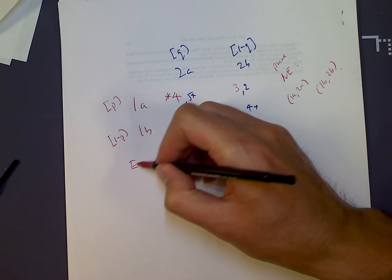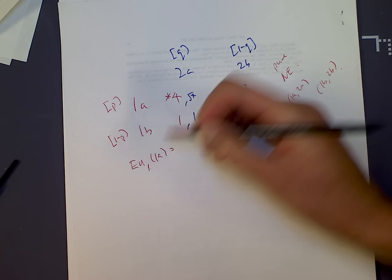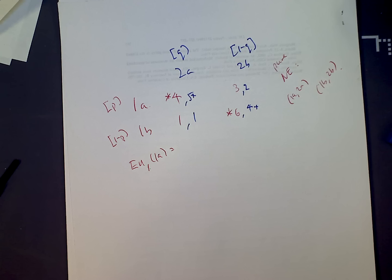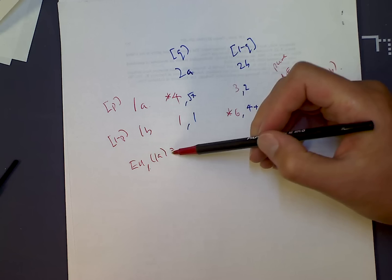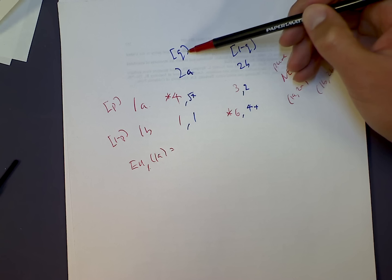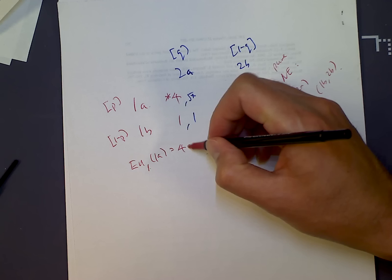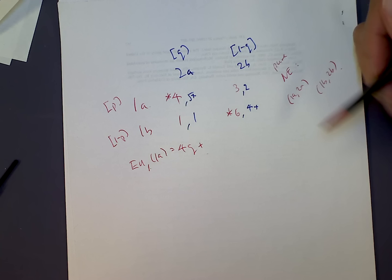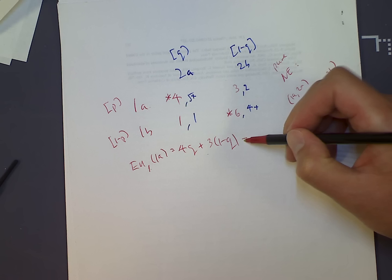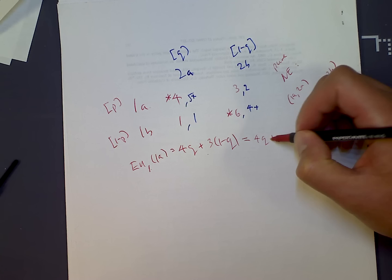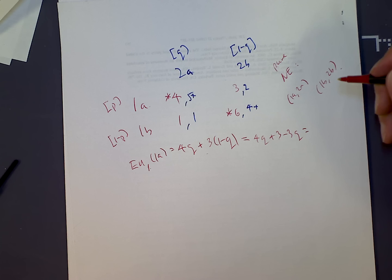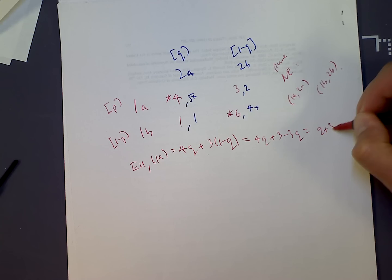Player 1's expected utility from playing A: given that player 2 plays A with probability Q and B with probability 1 minus Q. Player 1 gets 4 with probability Q, so that's 4Q, plus 3 times 1 minus Q. This simplifies to 4Q plus 3 minus 3Q, which equals Q plus 3.